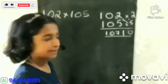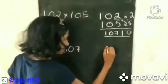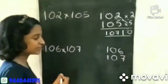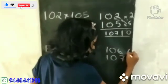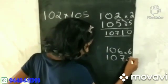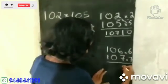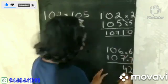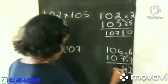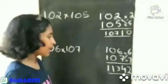Let's move to another example. We take 6 because the last digit of the number is 6, and 7 because the last digit of the other number is 7. We multiply 6×7 to get 42. Then we add 106 plus 7, or 107 plus 6 — both answers will be the same. We got the final answer of 11,342.